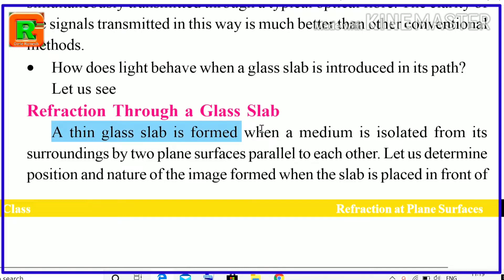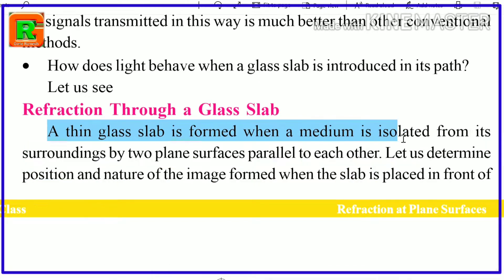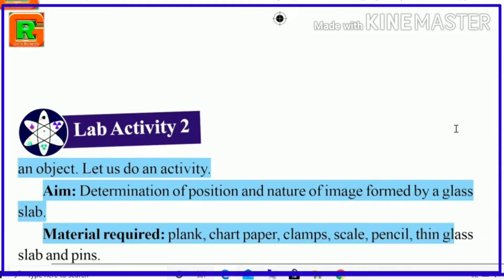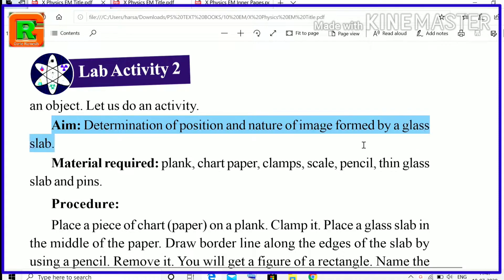A thin glass slab is formed when a medium is isolated from its surroundings by two plane surfaces parallel to each other. Let us determine the position and nature of the image formed when the slab is placed in front of an object. The aim of this activity is the determination of the position and nature of the image formed by a glass slab.